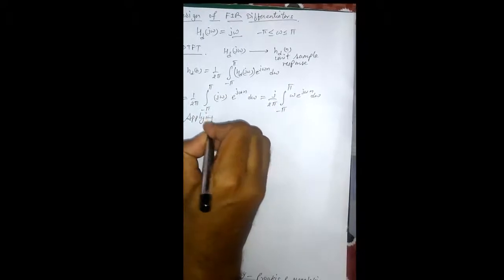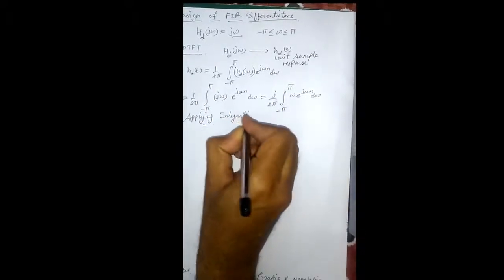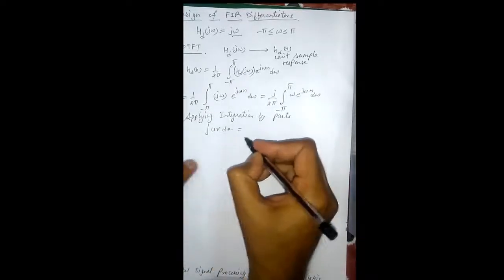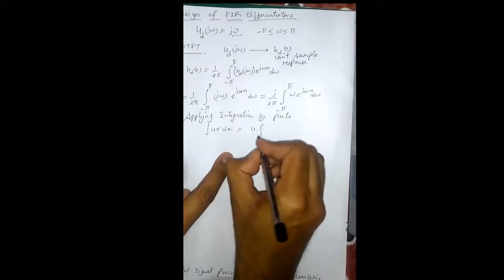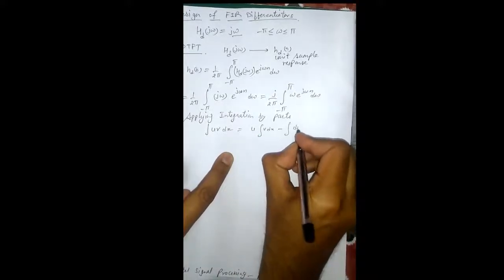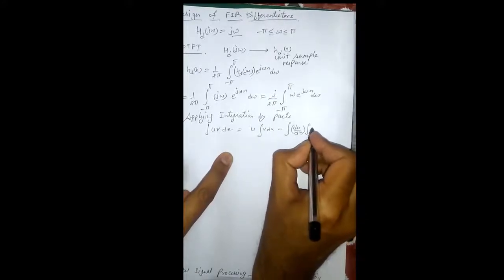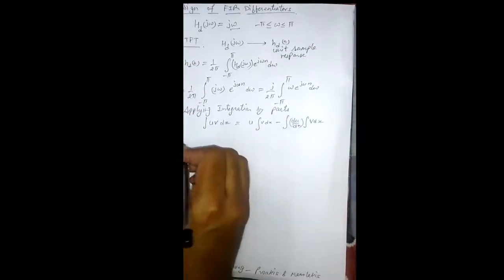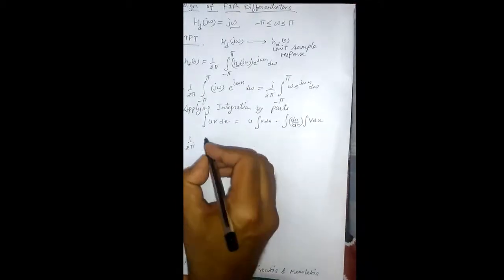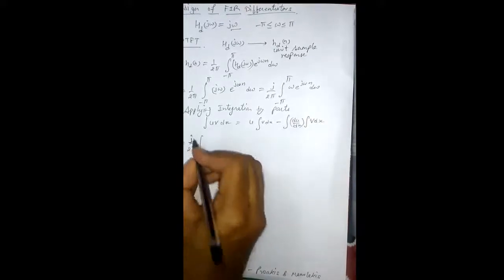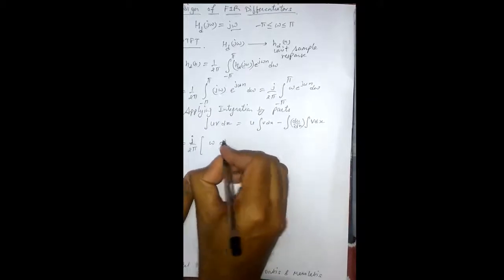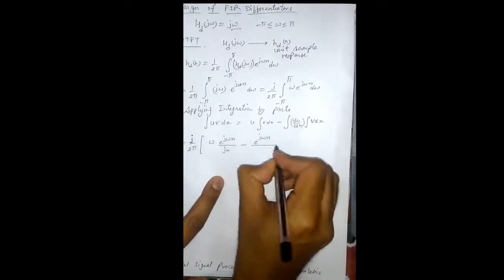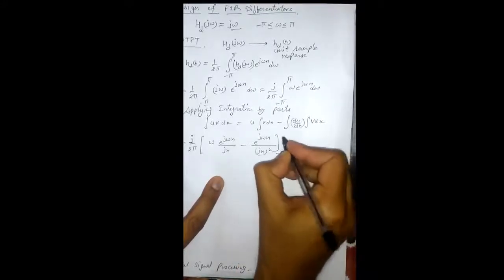Applying integration by parts — the formula states that the integral of u·v dx equals u times the integral of v dx minus the integral of (du/dx times the integral of v dx) dx — we obtain: Ω e raised to power jΩn upon jn, minus e raised to power jΩn upon jn squared, evaluated from minus pi to pi.